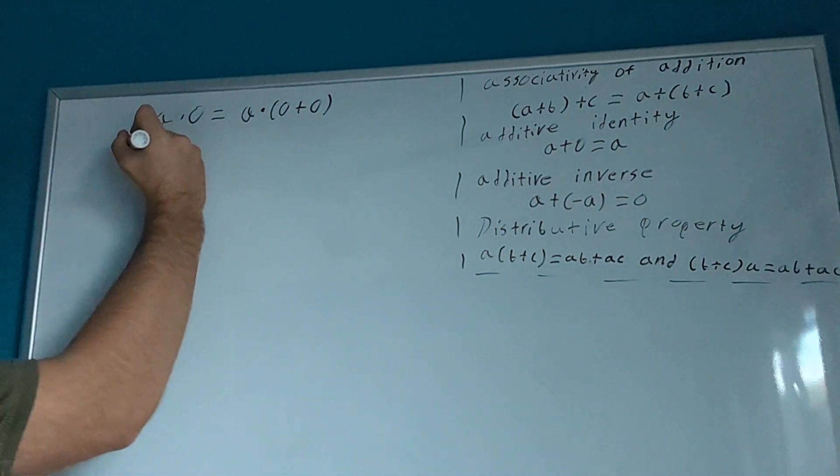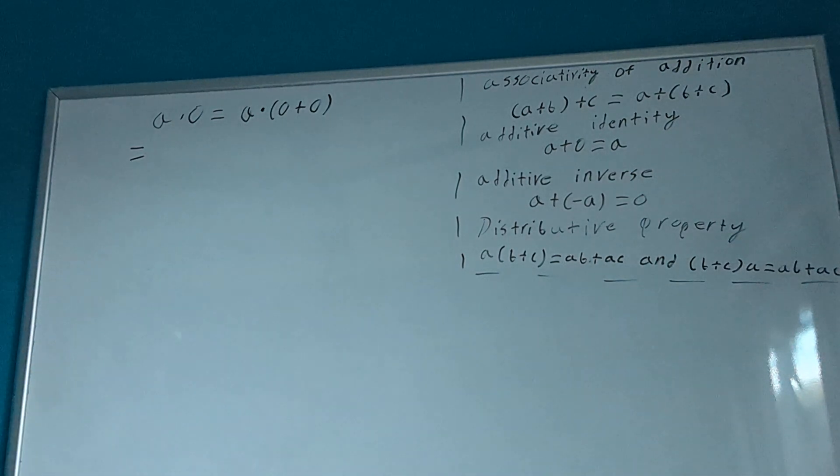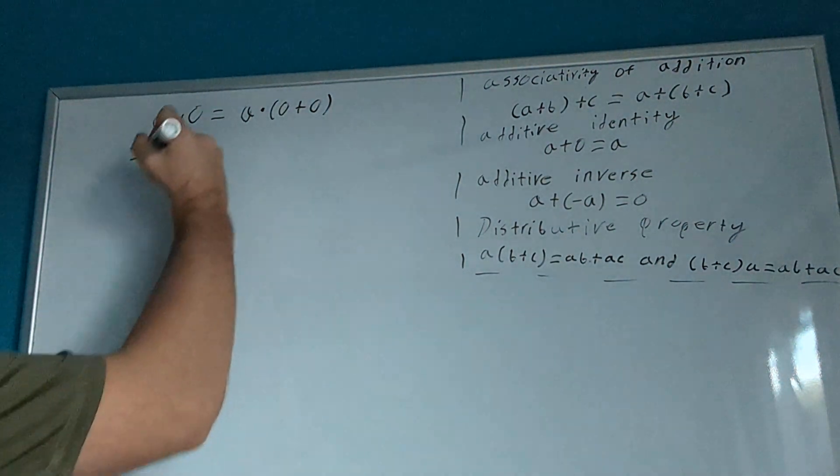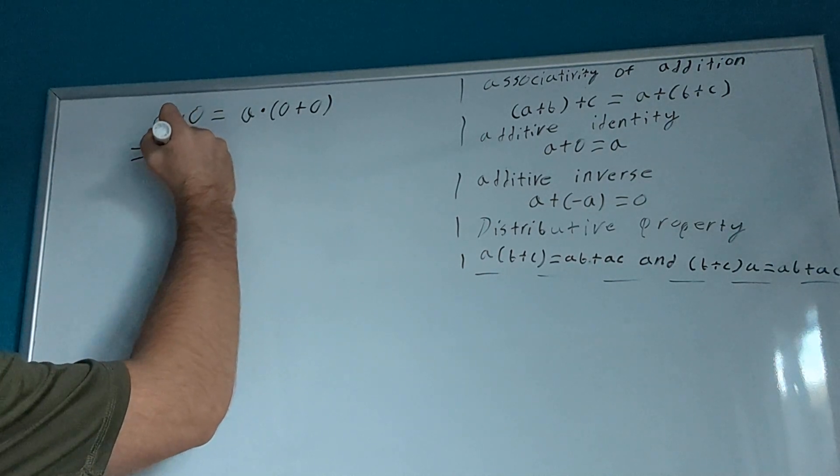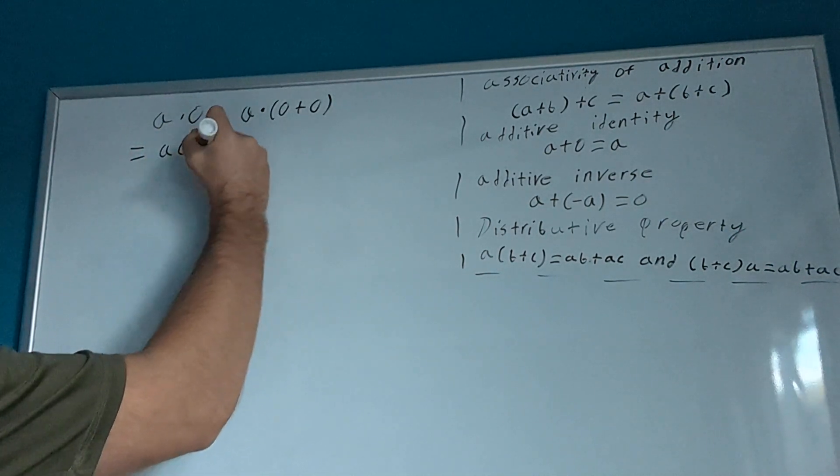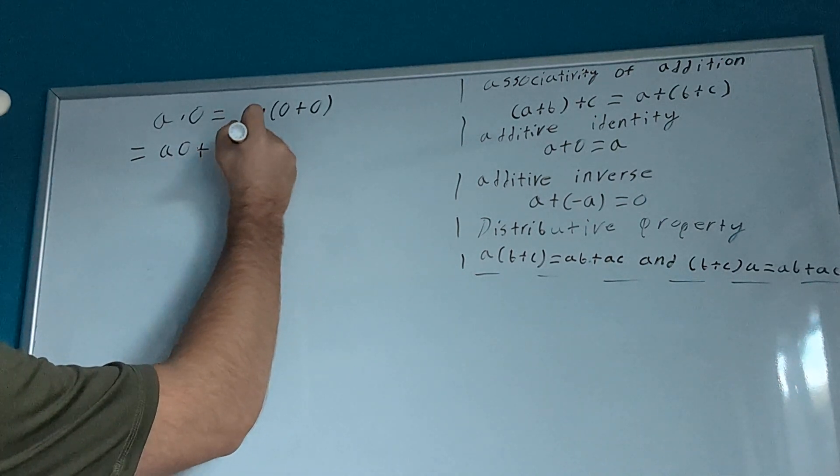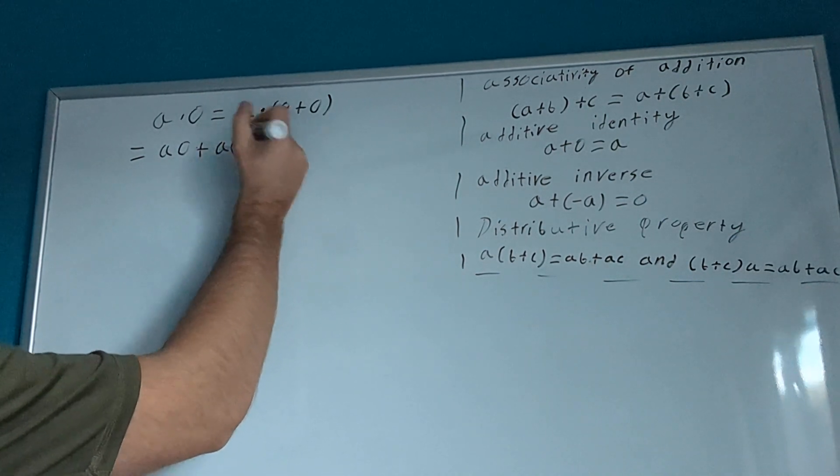Then, from here, what we're going to do is we're going to use the distributive property. So, we end up with a times 0 plus a times 0. I'll put the 0s in parentheses, actually.